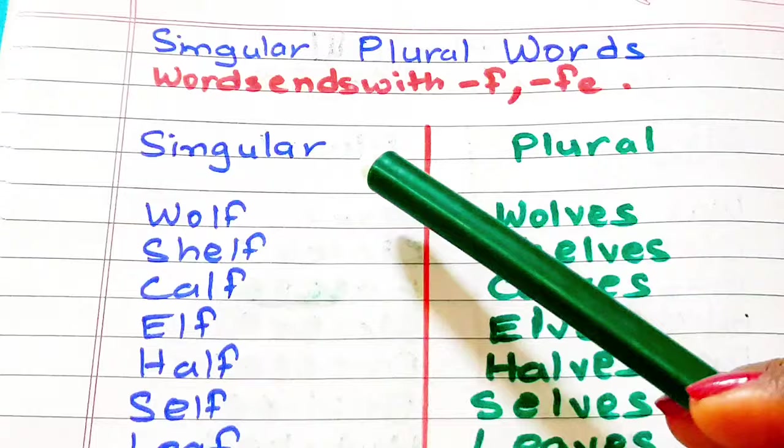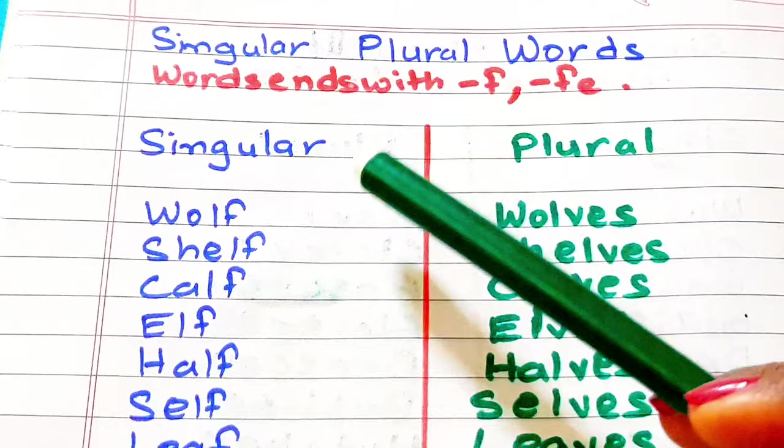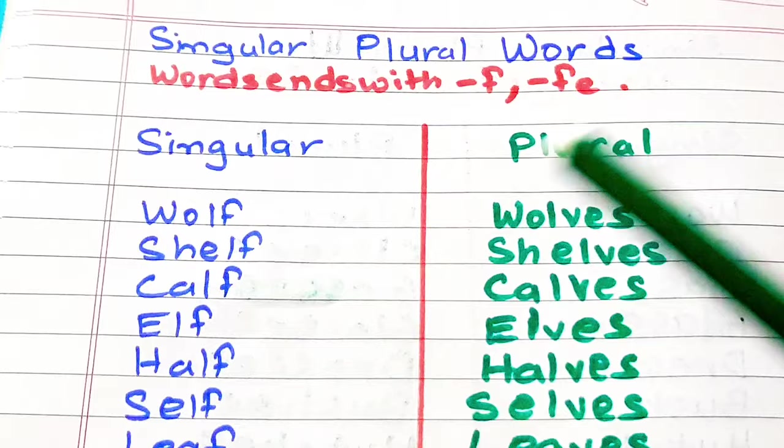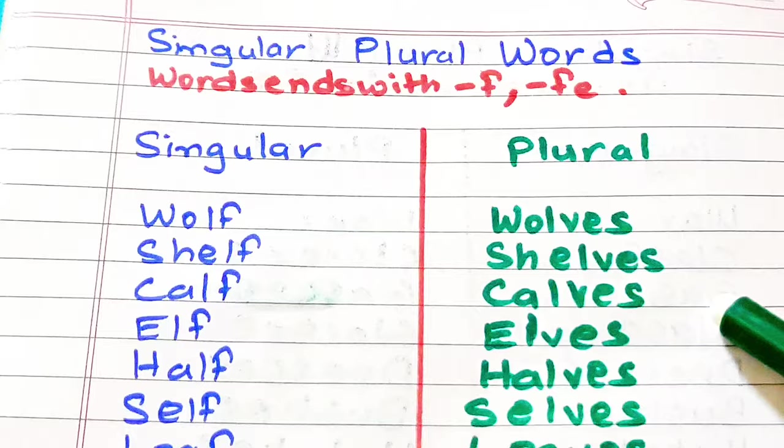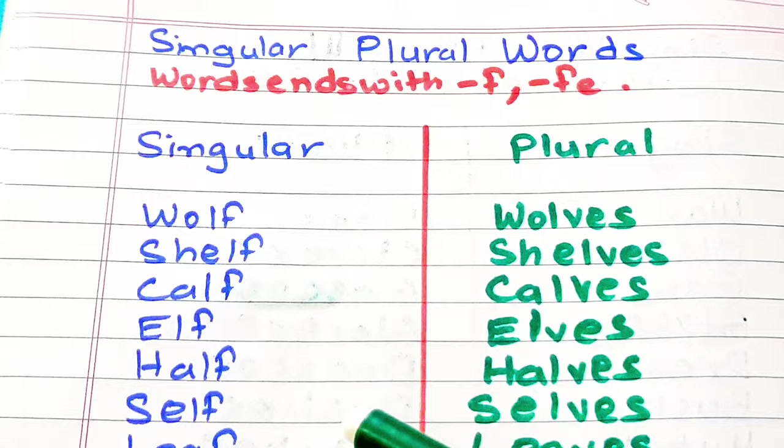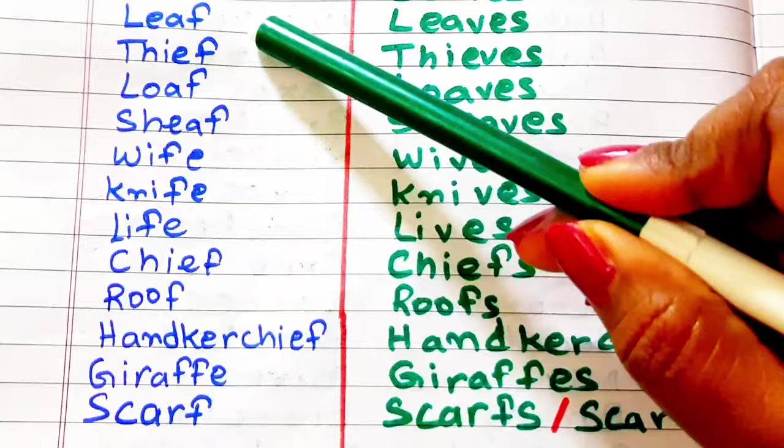Now we will see what are singular words ending with F or FE. But when it changes into plural, it will add V-E-S, like wolf, wolves. Shelf, shelves. Calf, calves. Elf, elves. Half, halves. Self, selves.